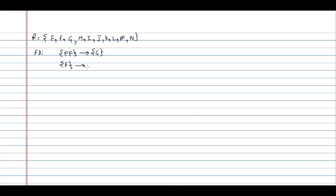EF determines G; F determines I and J; EH determines K and L; K determines M; and L determines N. These are the functional dependencies which are given.